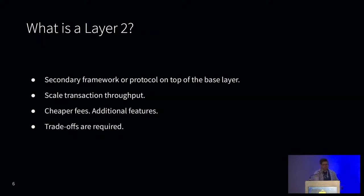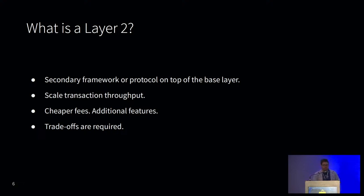What is a layer two? It's a method of conducting multiple transactions off the chain, eventually reconciling that balance to the base layer. By scaling transaction throughput, layer twos can have lower fees, faster transactions, and enhanced privacy. But there's no free lunch — layer twos must have some trade-offs for these improvements. If there was an easy, trustless, decentralized way to scale without any trade-offs, then that would just be incorporated into Bitcoin itself.